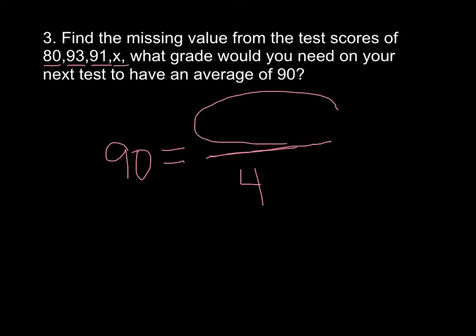Now up here is the sum of the numbers. So I'm going to add 80 plus 93 plus 91 plus X, and I'm going to get 264 plus X. Remember, you can't add the X there. Now this is an equation. I want to get X by itself. So I'm going to get rid of this 4.